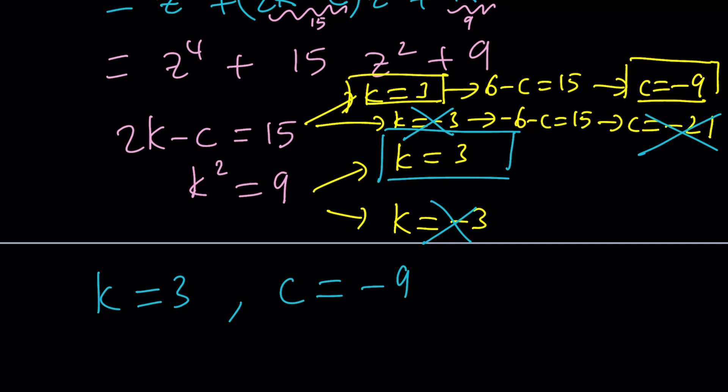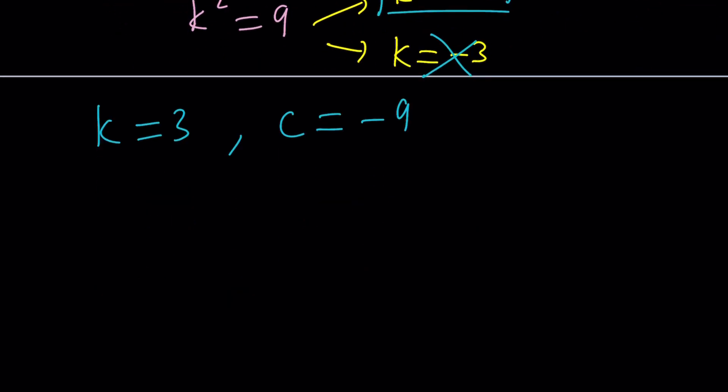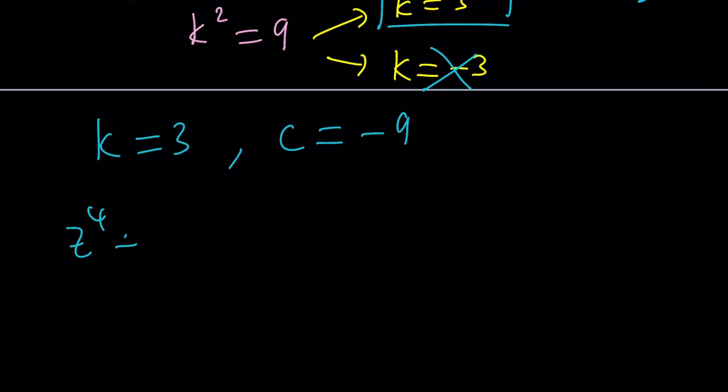So let's go ahead and go back to our assumption, like the way we wrote it, and then I'll kind of show you, you can also do this without going into any of this. So there's even an easier way to do it. Okay? So given our expression z to the 4th plus 15 z squared plus 9, we were able to write it as z squared plus k quantity squared minus c z squared.